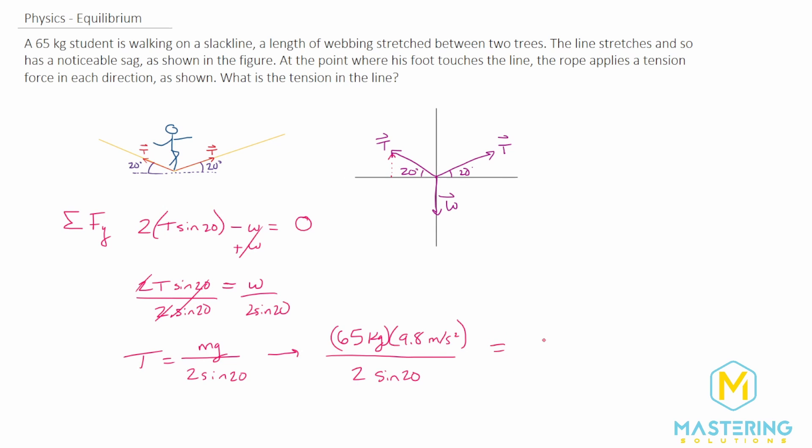We could use two significant figures, so 930 newtons is the tension in the rope.